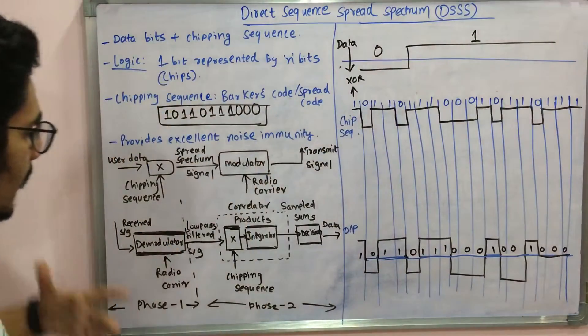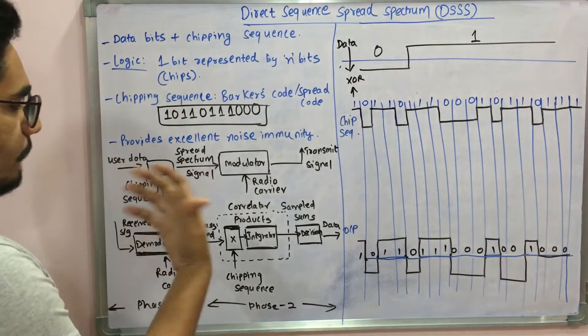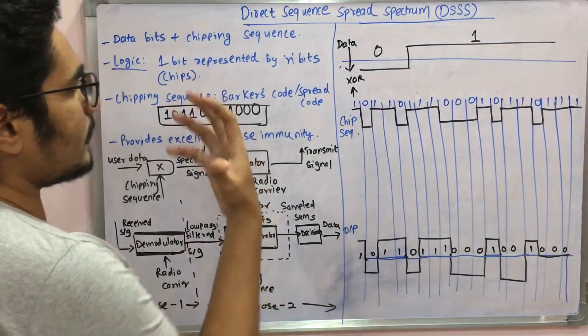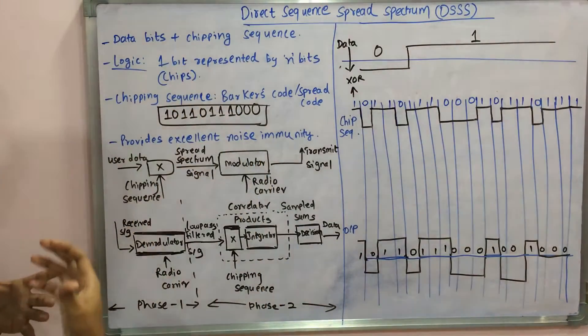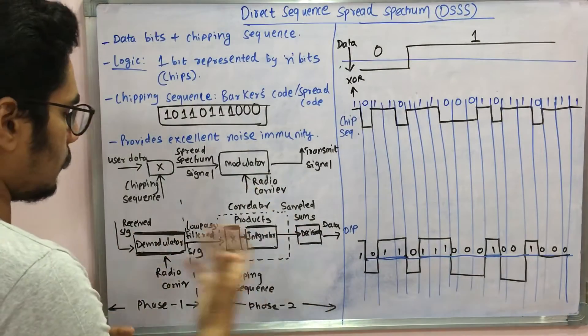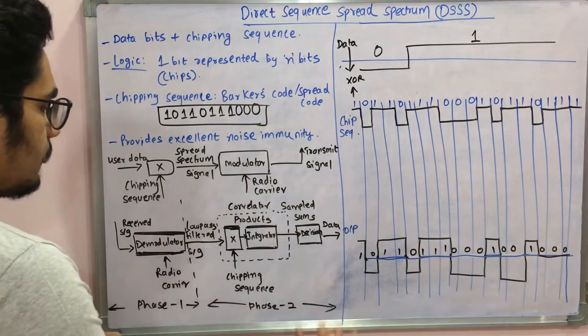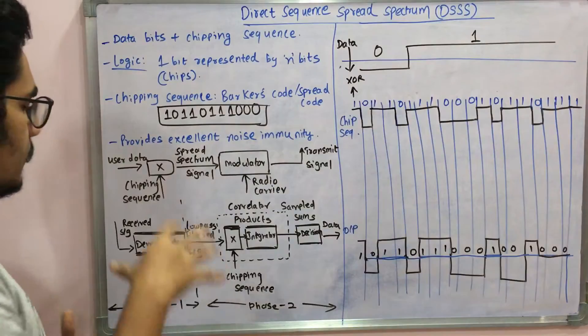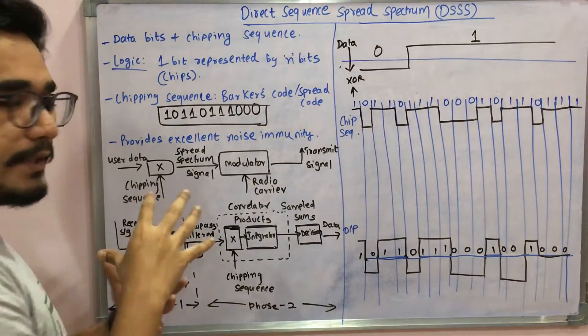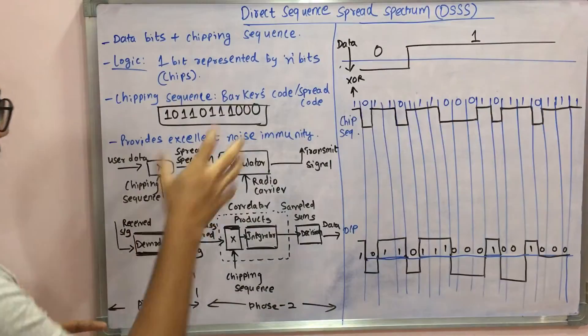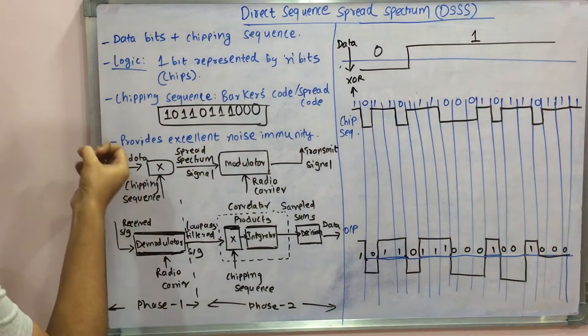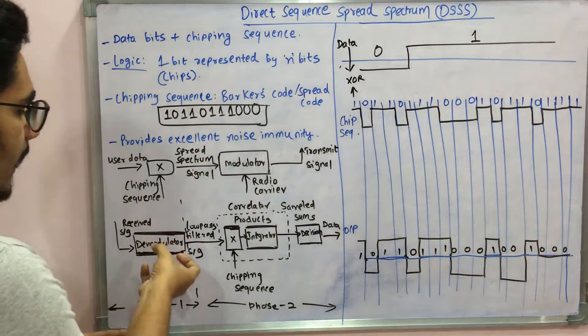After that we have the demodulation phase, which is a bit complicated in DSSS. It's broken down into two phases: phase one and phase two. Phase one is difficult.